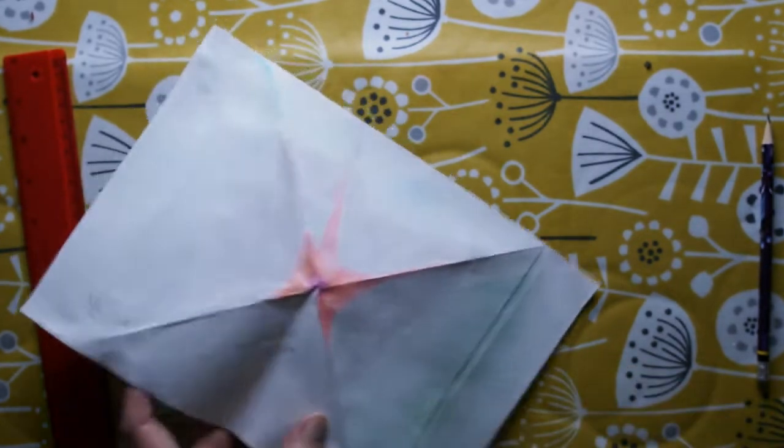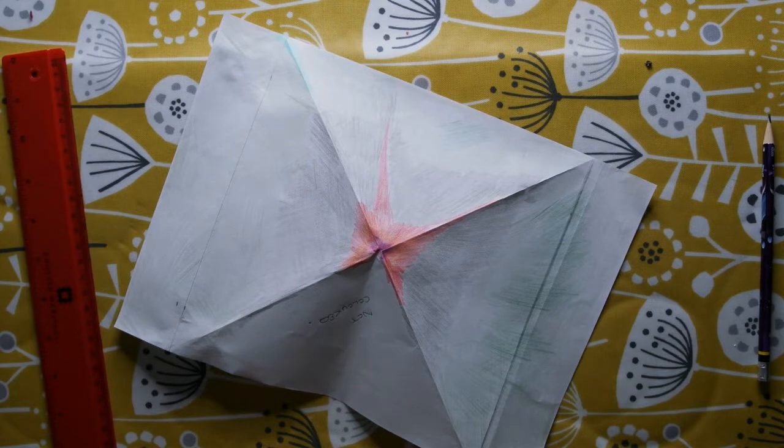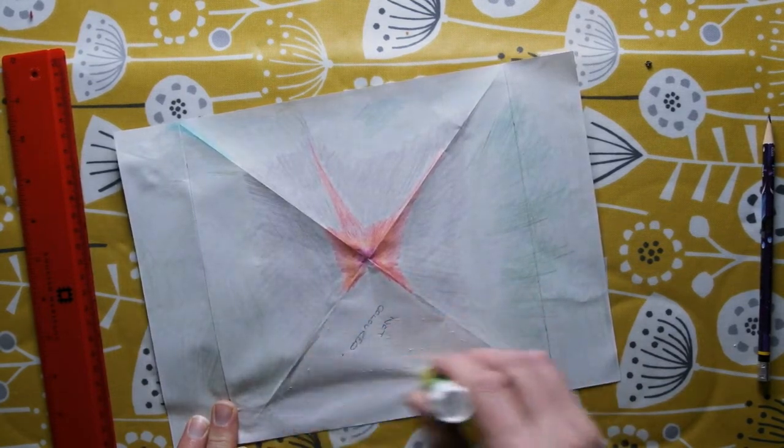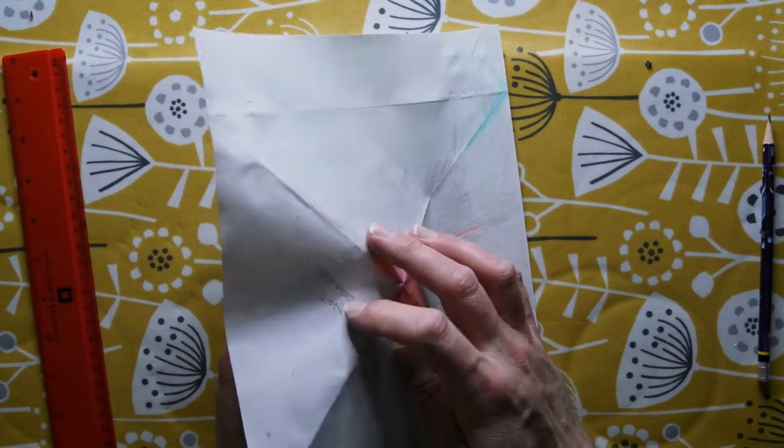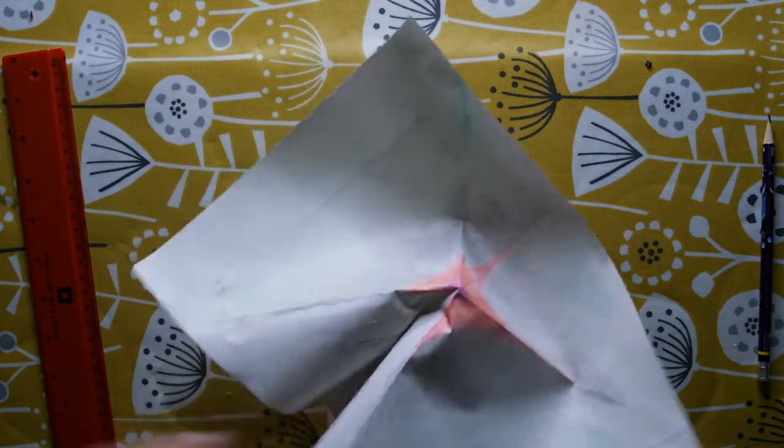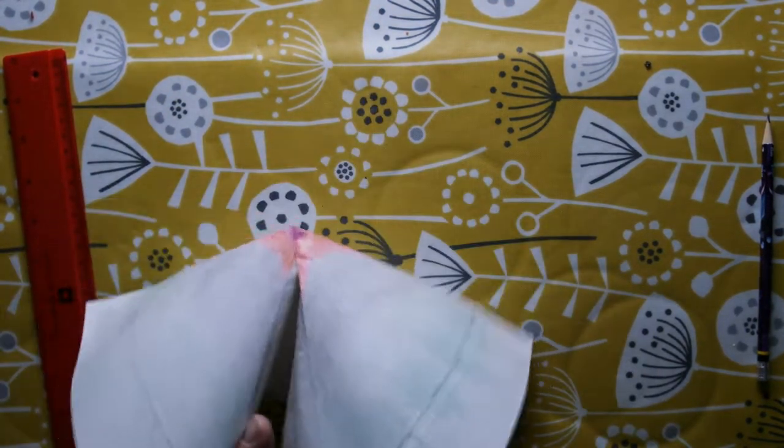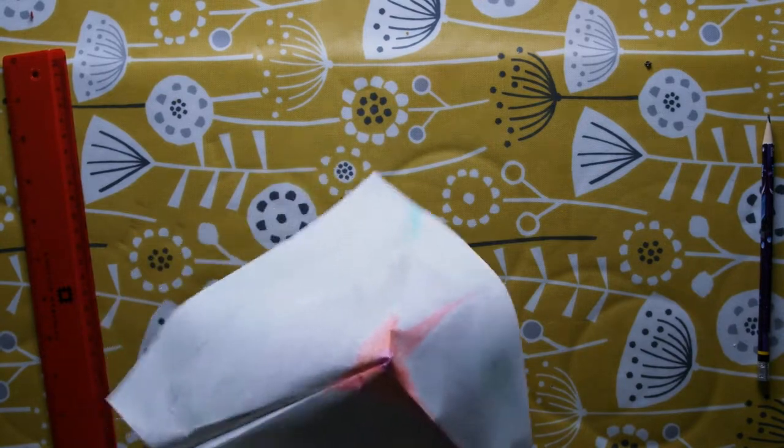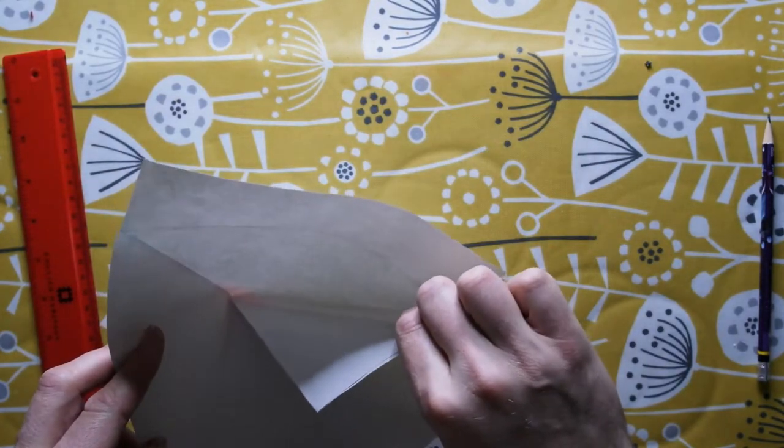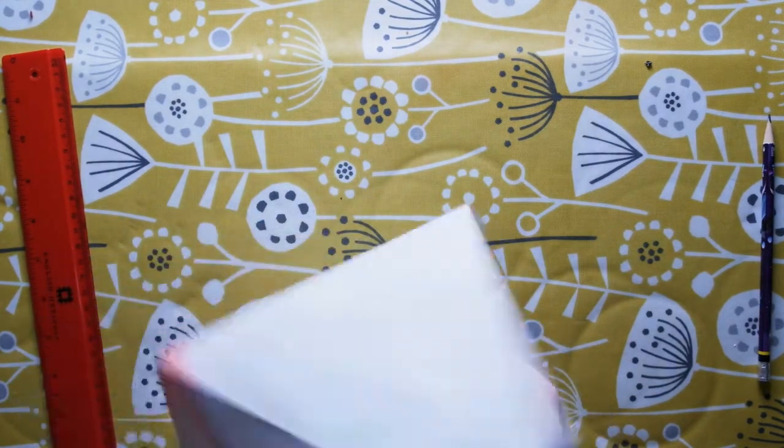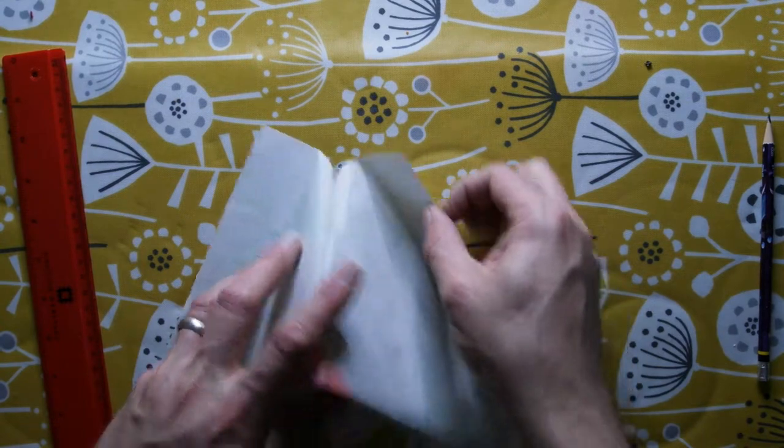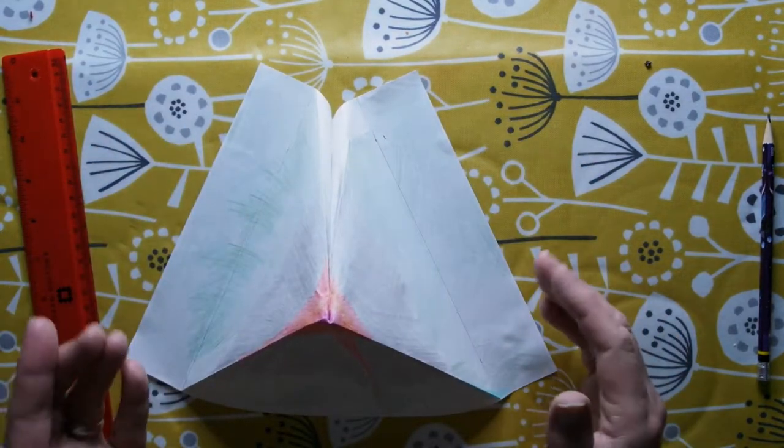So what I want to do now is I want to glue this back section. So we'll lay it down for that again. Take some glue stick. Make sure all of that is glued. It's not yet a full volcano.